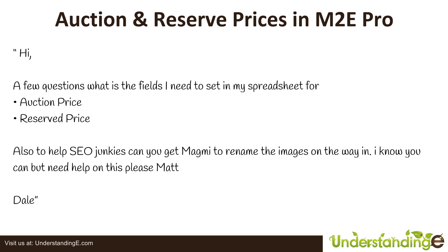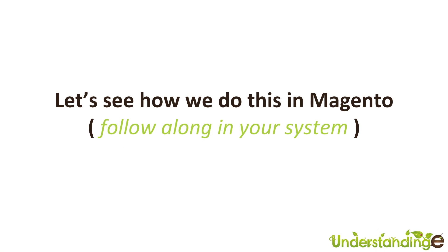We'll also cover how to create custom pricing attributes if you're going to be selling auctions or used products within Magento. The topic around Magmi image renaming is a deep topic and we've created a whole separate video guide for that, so we'll pop that up on screen in a few moments. Let's jump across to our system now and show you the guide for renaming images and also the core of the question around auction prices and reserve prices in M2E Pro to list on eBay.